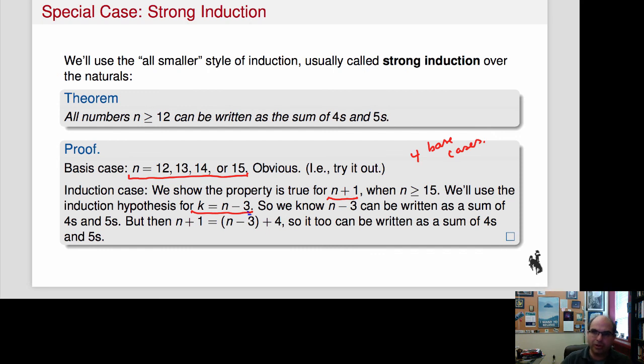So now n plus 1 is equal to n minus 3 plus 4. That's just algebra. And that n minus 3 can be written as the sums of 4s and 5s. So all I did was I added one more 4. So yeah, it can also be written as the sums of 4s and 5s. So that's that proof.